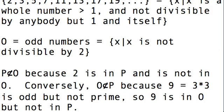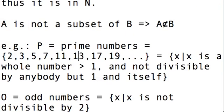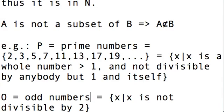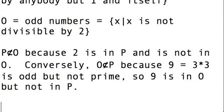So 9 is in O but not in P. So these are two sets which really don't have much to do with each other. Well, most prime numbers are odd, so actually the prime numbers have a lot to do with odd numbers.